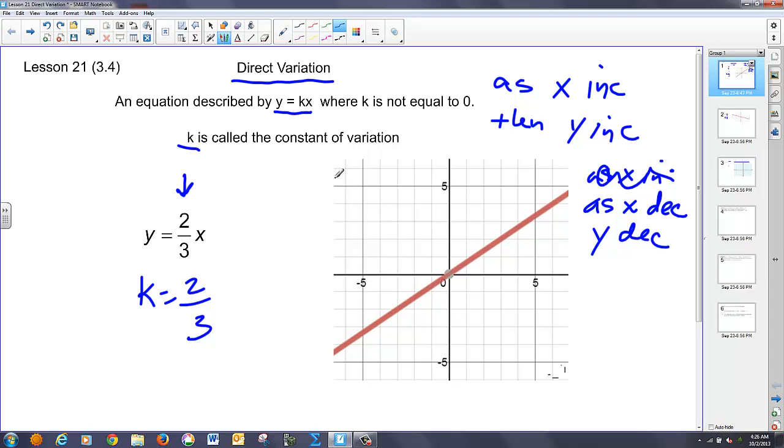And let's look at the variation constant of two-thirds here. If we take a look at the slope of this line, here's another point on that line. And if I go up two and over three, we have a rise over a run equaling two-thirds, which is our slope or the change in y over the change in x.